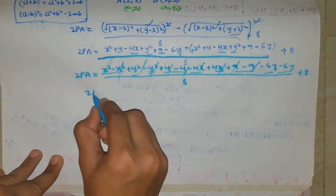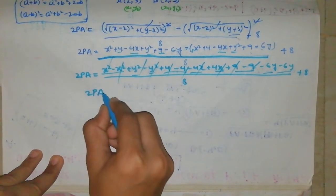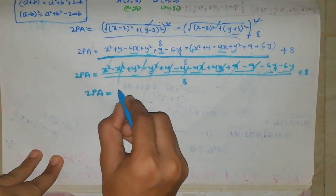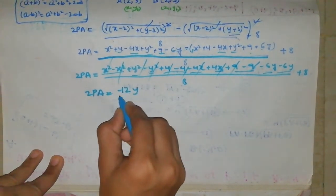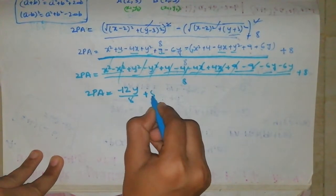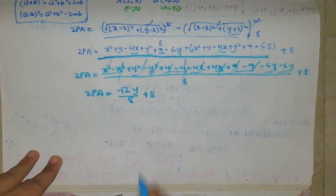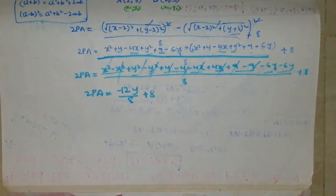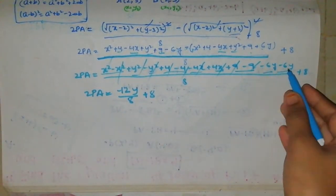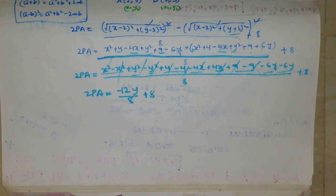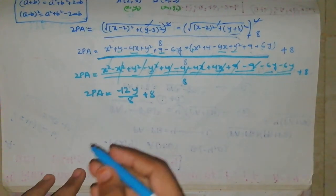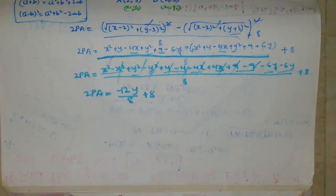You can cancel these terms. So 2PA equals minus 12y by 8 plus 8. You can simplify: minus minus gives plus, so minus 12.